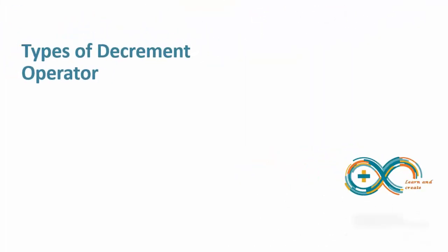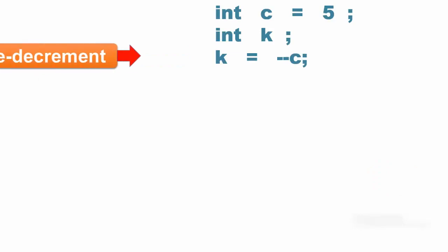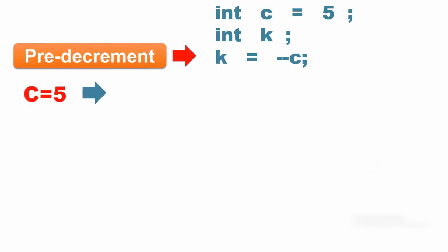The decrement operator is similar to the increment operator but is used to decrease the R value of a variable by 1. This code shows pre-decrement operation. This causes the R value of C to be fetched, its R value decremented to 4 and that value is then assigned into K leaving both variables C and K with the value of 4.